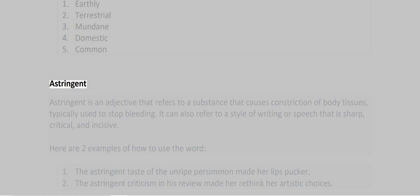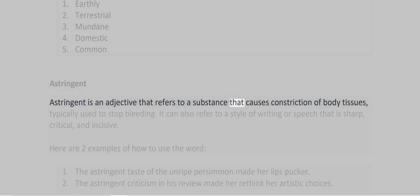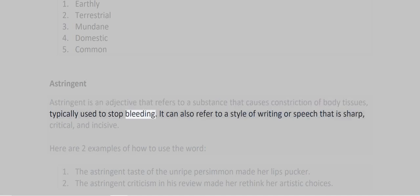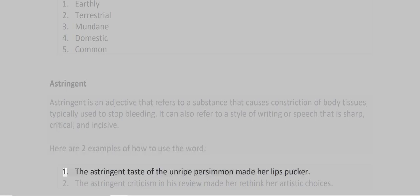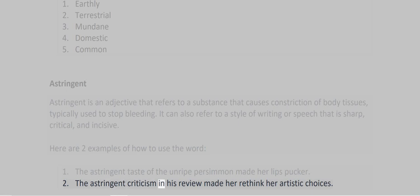Astringent. Astringent is an adjective that refers to a substance that causes constriction of body tissues, typically used to stop bleeding. It can also refer to a style of writing or speech that is sharp, critical, and incisive. Examples: 1. The astringent taste of the unripe persimmon made her lips pucker. 2. The astringent criticism in his review made her rethink her artistic choices.